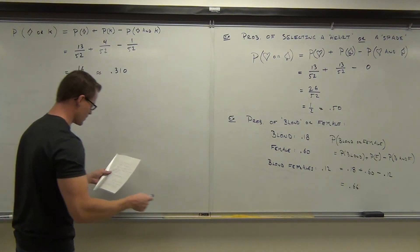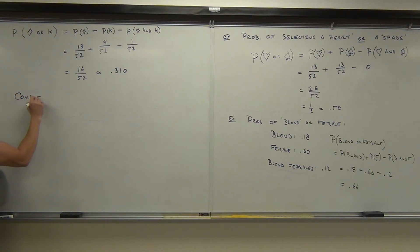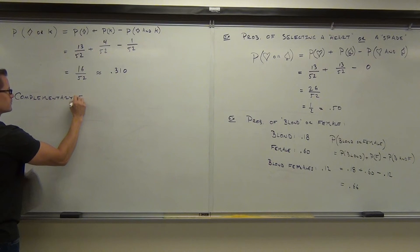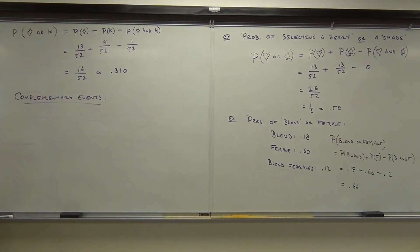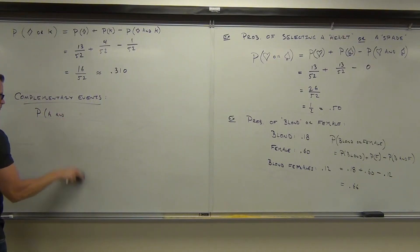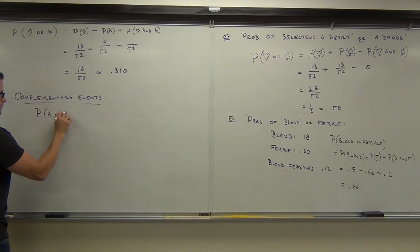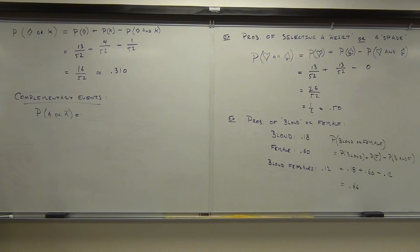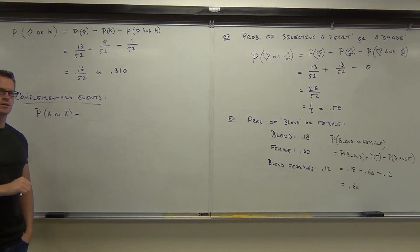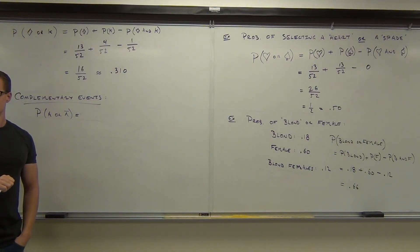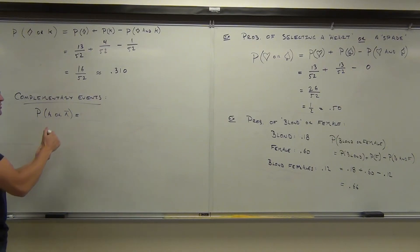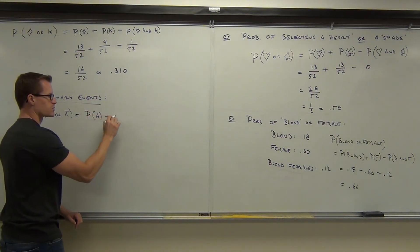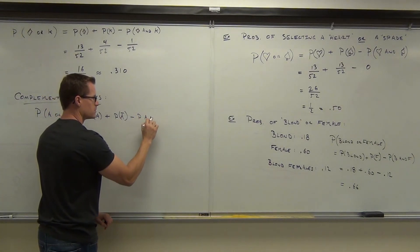Now the last thing we're going to talk about is complementary events. Do you remember that notation? This is event A; this is the complement of event A. That bar on top means the complement of this event. What's the probability of this? By the addition rule, the probability of A plus the probability of the complement of A, minus the probability they can occur together at the same time.